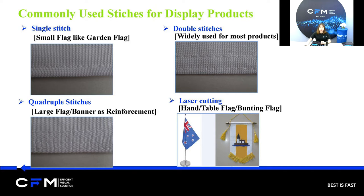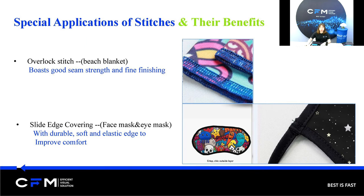Now you may have a preliminary idea of the stitches we have. I would like to show you some special applications of stitches and the benefits they bring. Firstly, lock stitch is a kind of stitch that goes over the edge of one or two pieces of fabric for edging, hemming, or seaming. Overlocking is also referred to as overedging, mirroring, and serging. Serging technically refers to overlocking with cutters. In practice, the four terms are used interchangeably.